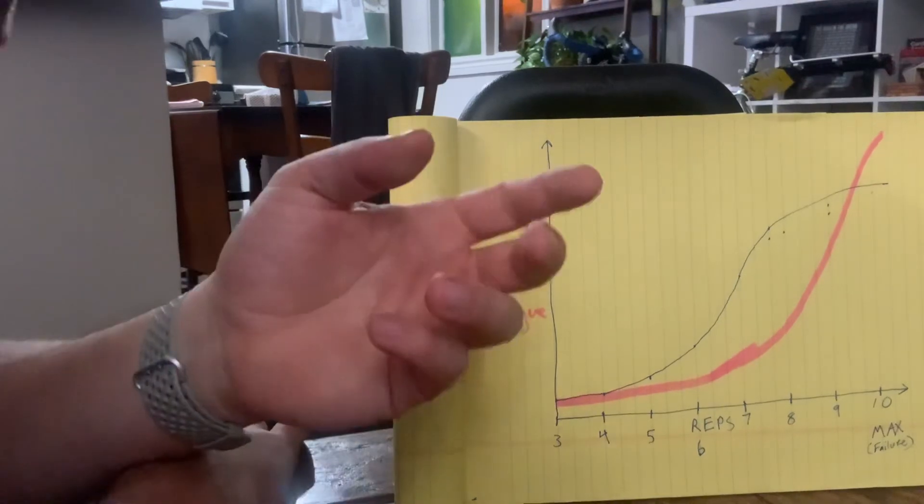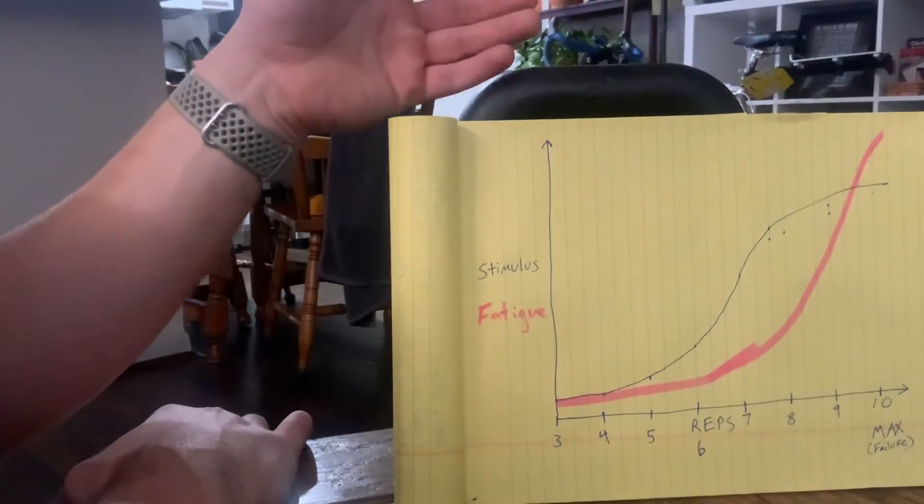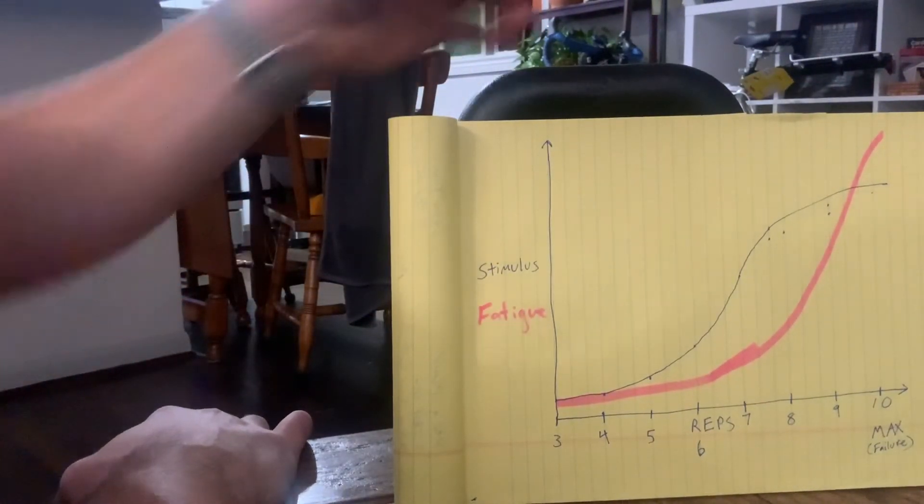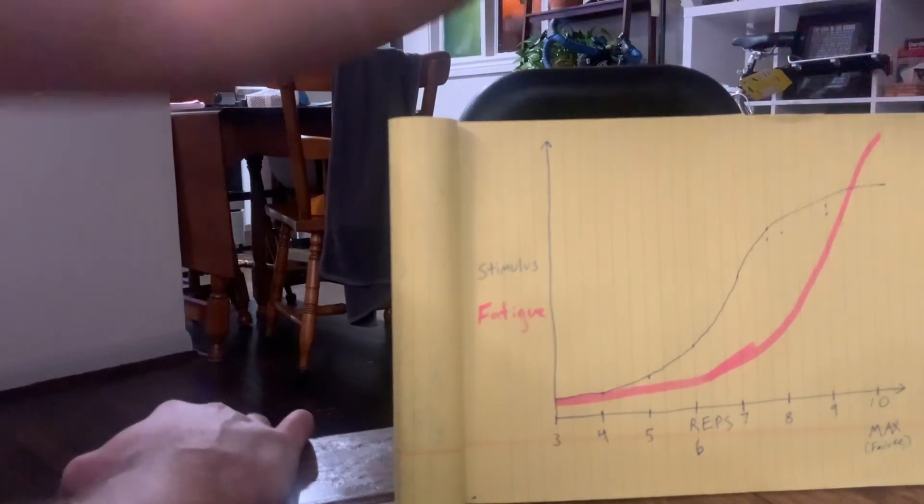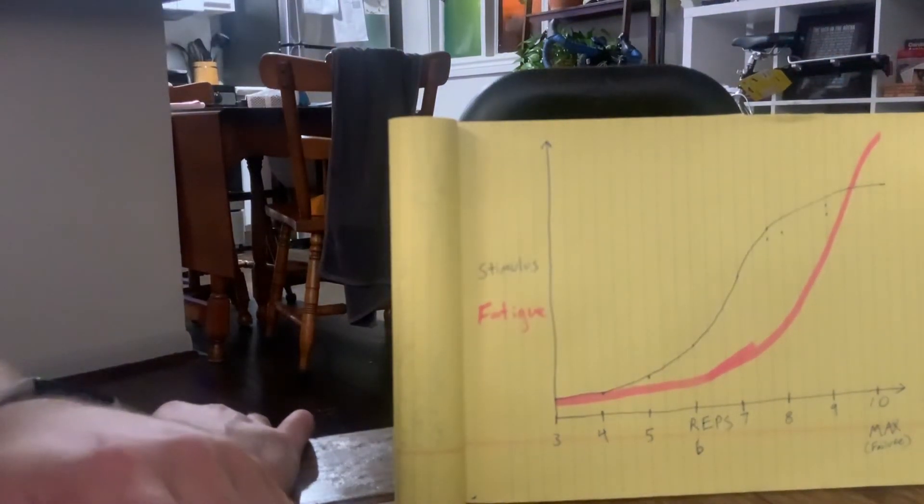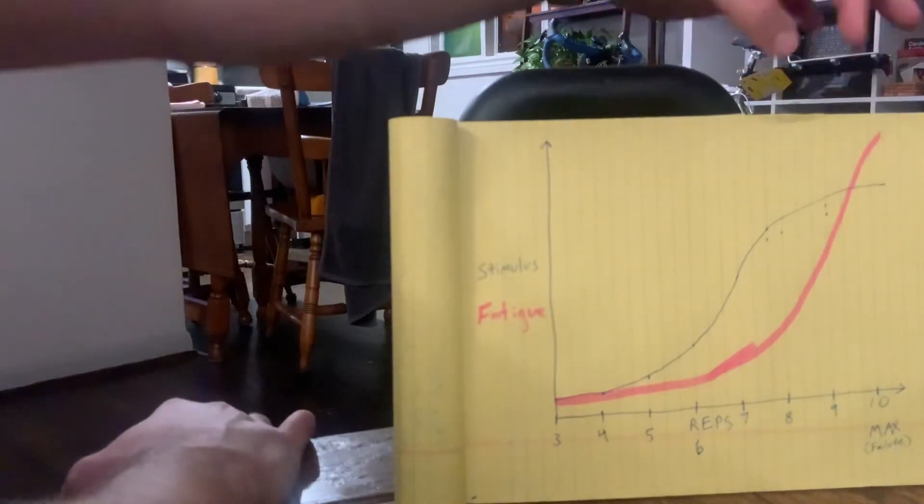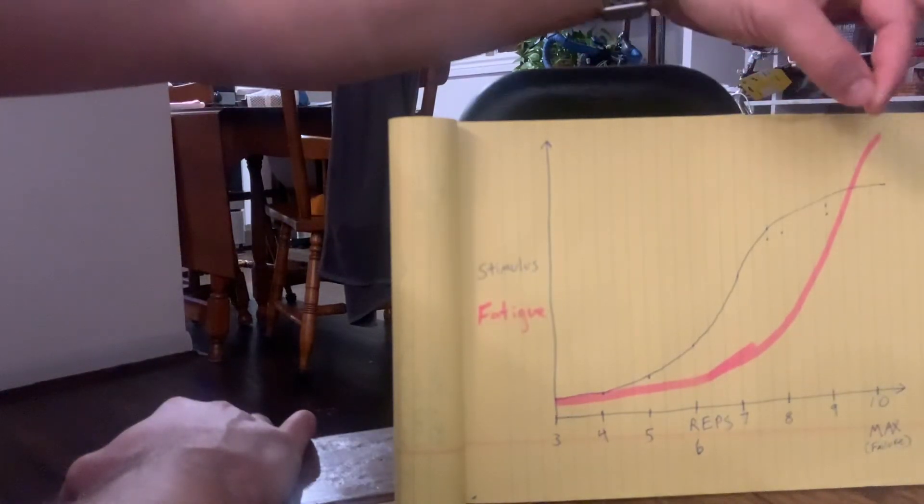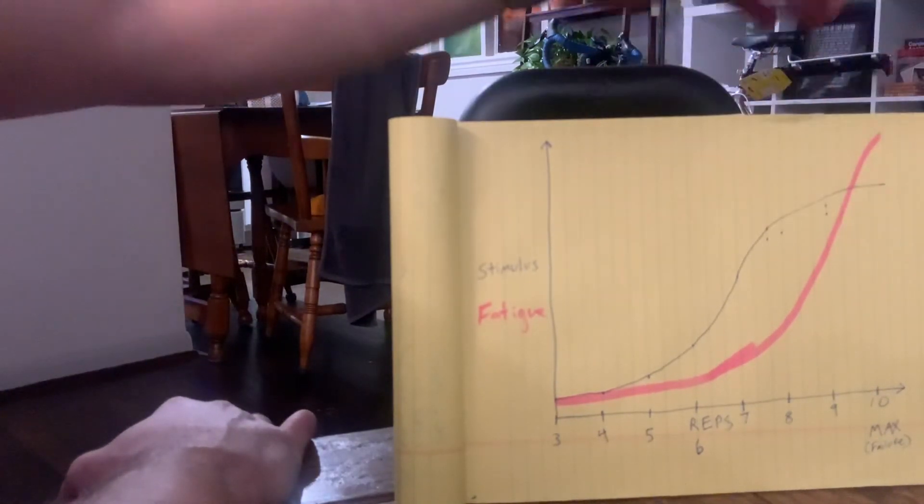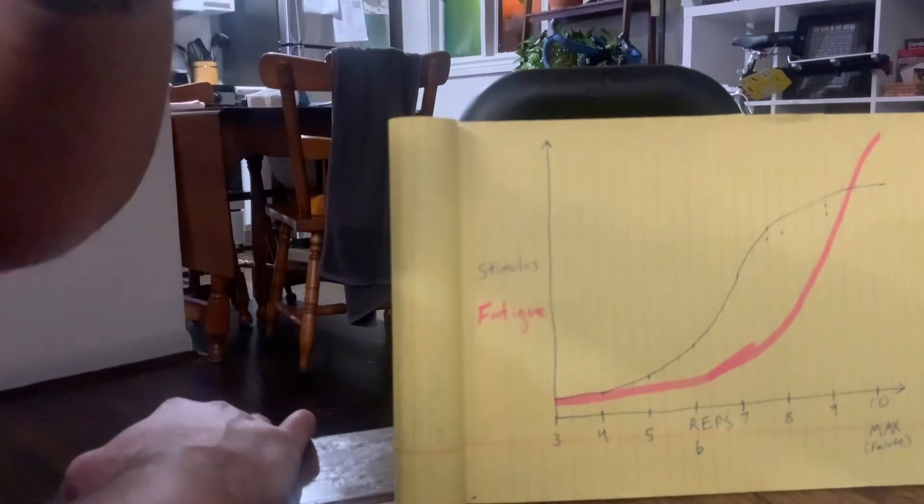In our case, we're only training three times a week for about an hour. We're not going crazy with it, so it's not as big of a concern going over here. But yeah, so that's kind of how the proximity to failure and the relationship to stimulus and fatigue works.